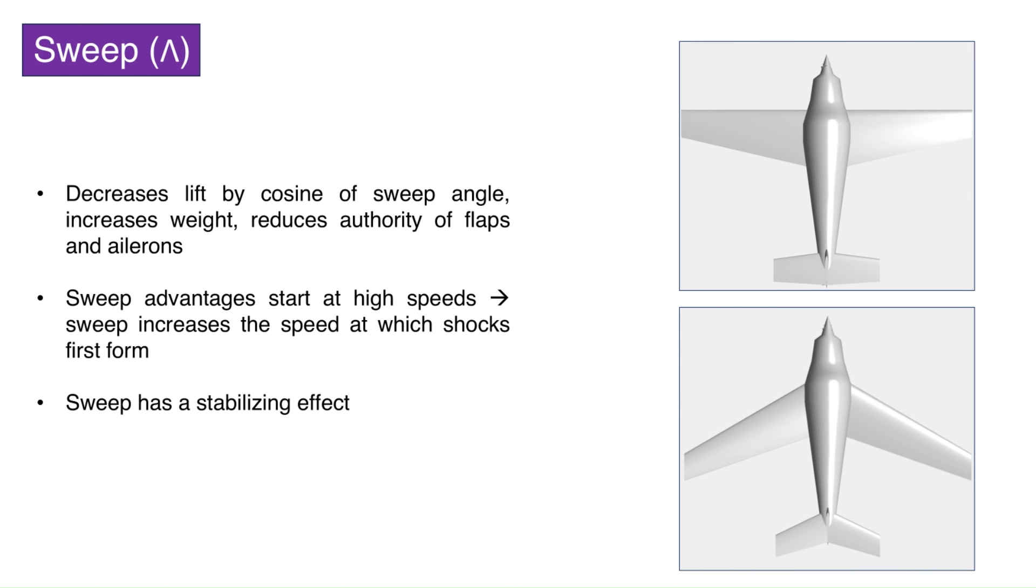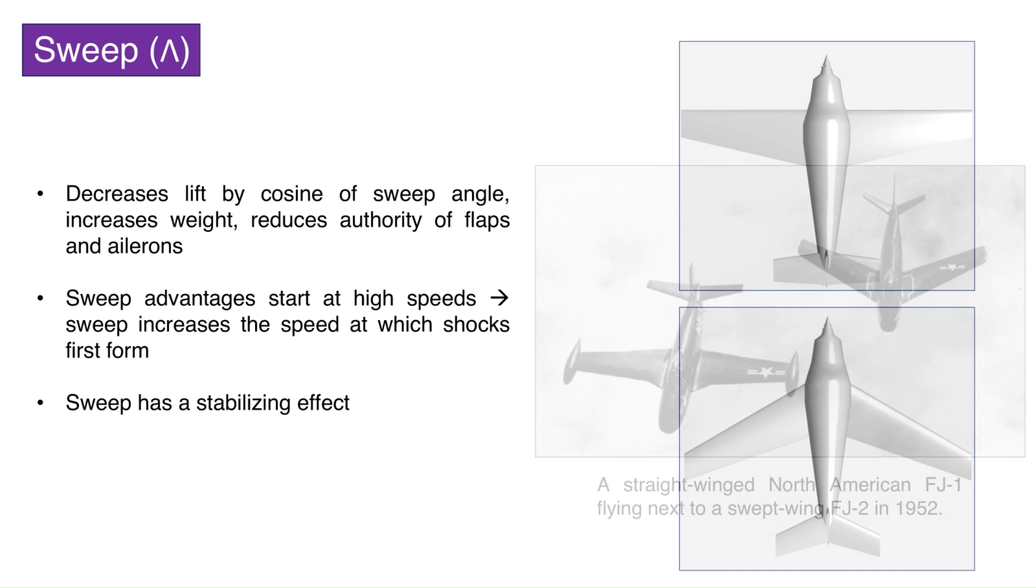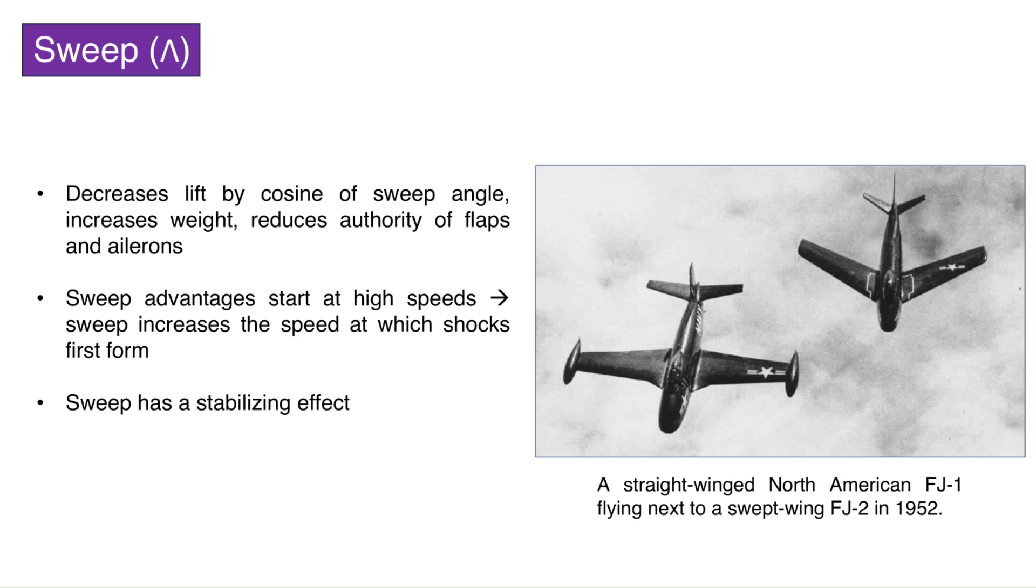Sweep. Sweeping the wing is more aesthetically pleasing, but sweep decreases the lift produced by the wing by the cosine of the sweep angle. For example, a 60-degree sweep will cause the wing to lose half of its lift. It also increases the structural weight and makes the ailerons and flaps work poorly. Swept wings are also more prone to flutter issues. Swept wings have aerodynamic advantages when it comes to flying at high speeds. Sweeping the wing increases the speed at which shocks first form. A swept wing also has a stabilizing effect like the dihedral of a wing.